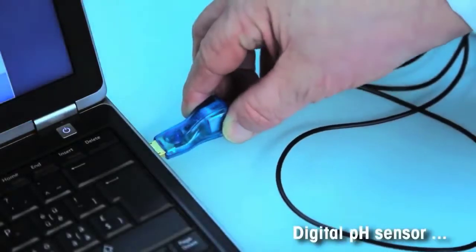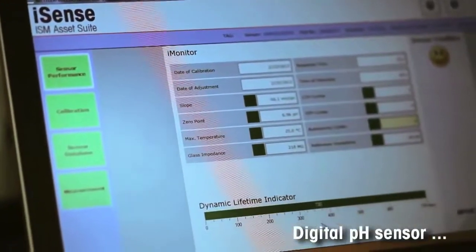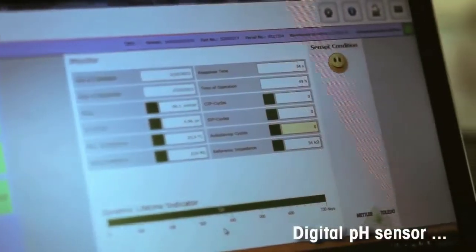Simply connect the digital sensor to your computer and iSense Asset Suite software immediately informs you about the sensor's status.